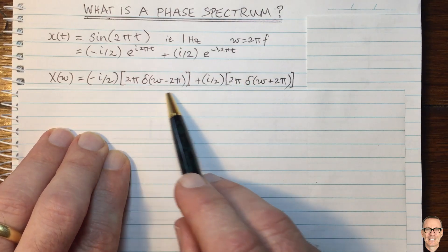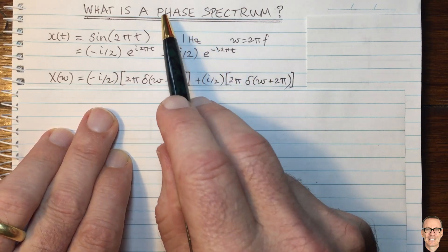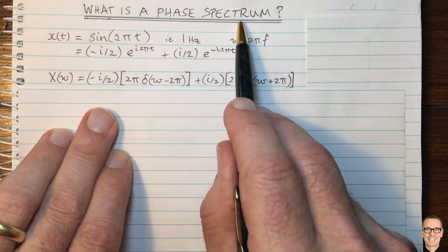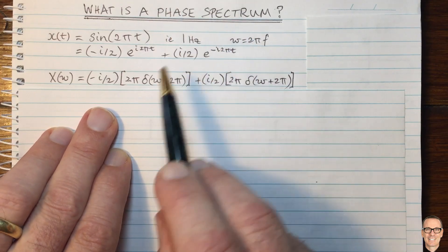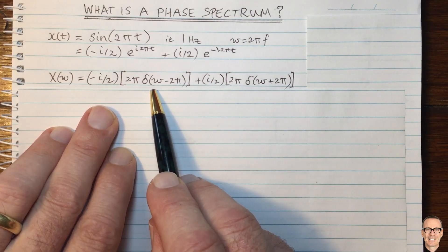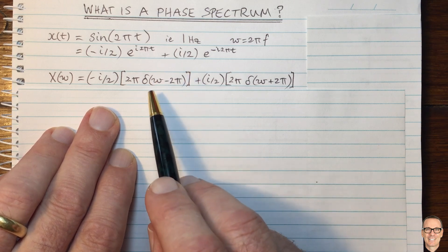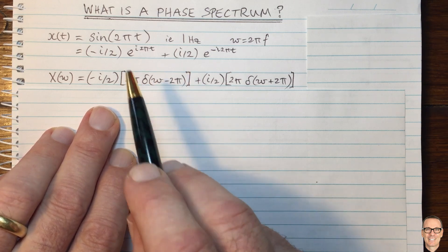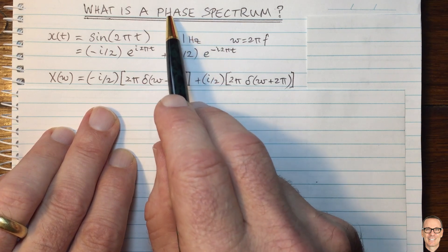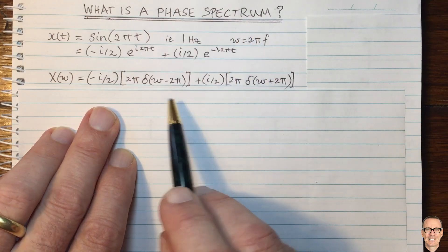Now let's think about plotting this — and that's where we're going to see the phase spectrum. Most people are familiar with the amplitude spectrum, sometimes called the magnitude spectrum. We'll show that as well and show its relationship to the phase spectrum.